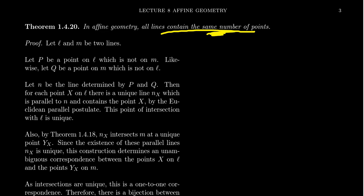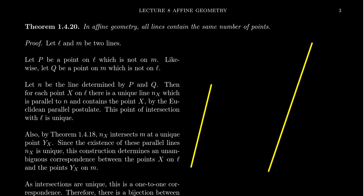This happens in general, and this is actually a very beautiful proof — one of the most important proofs for affine geometry — that all lines contain the same number of points. To prove this, we take two arbitrary lines L and M. Since these lines were chosen arbitrarily, we're going to prove they have the exact same number of points.